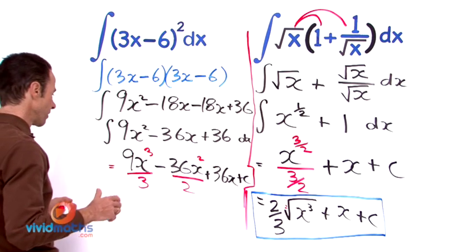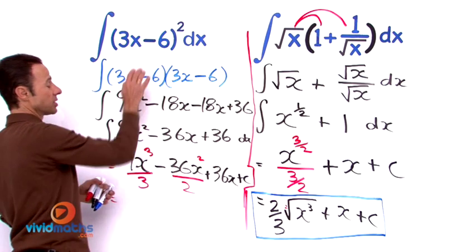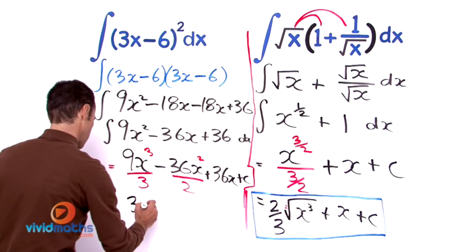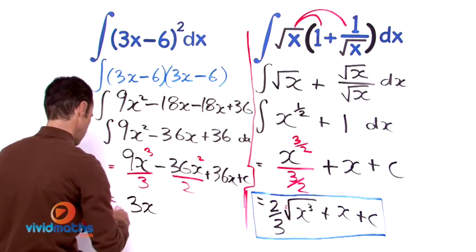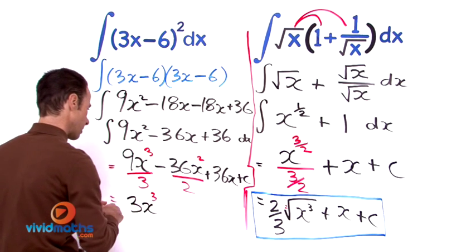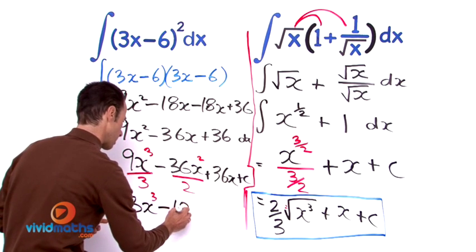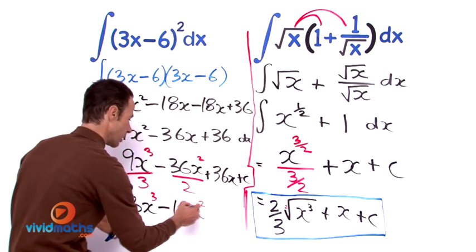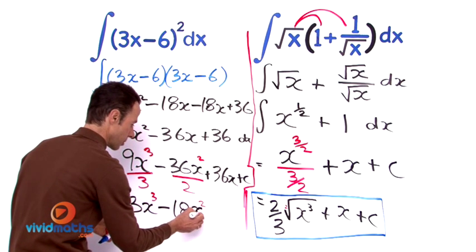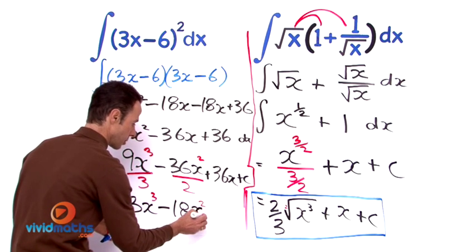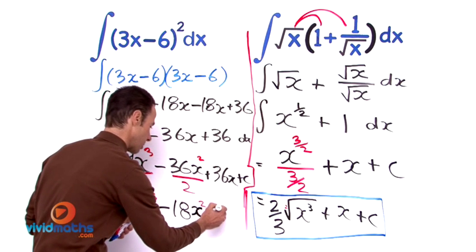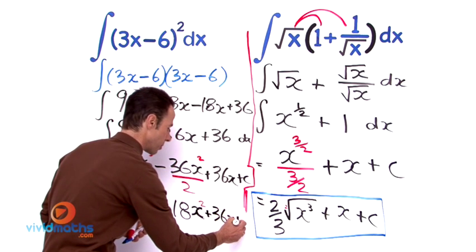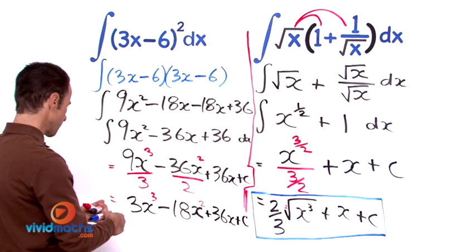The answer for the integral to this question is going to be 3x cubed minus 18x squared plus 36x of course plus C, a very important plus C there.